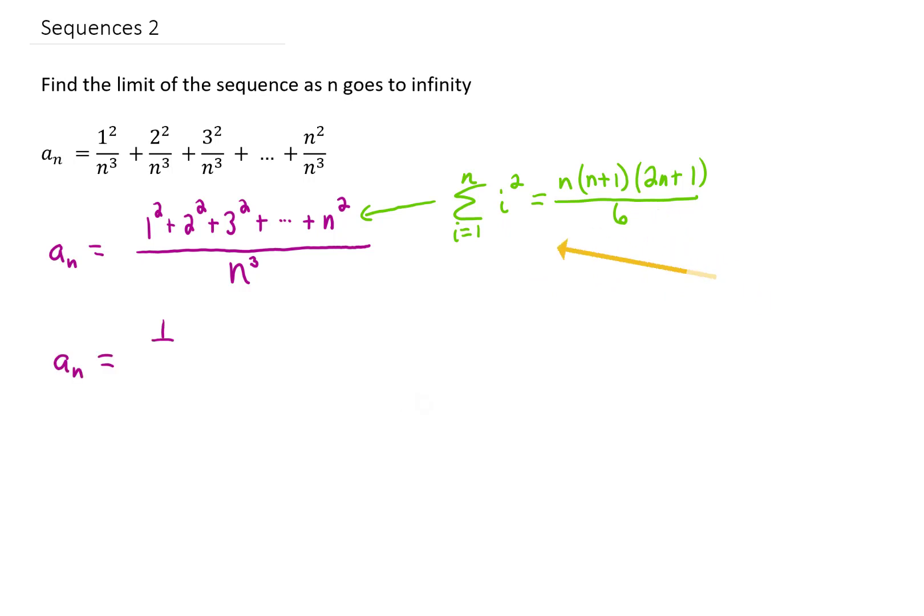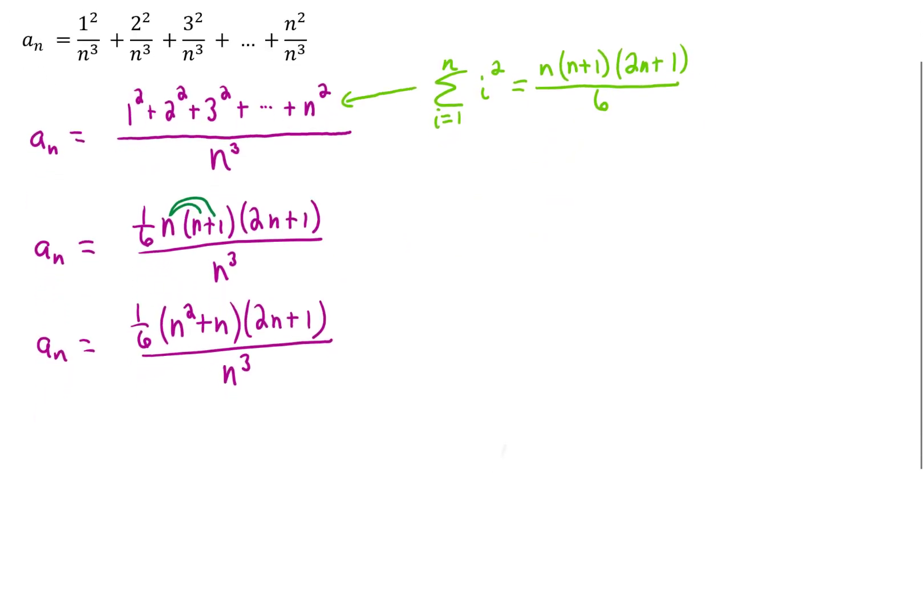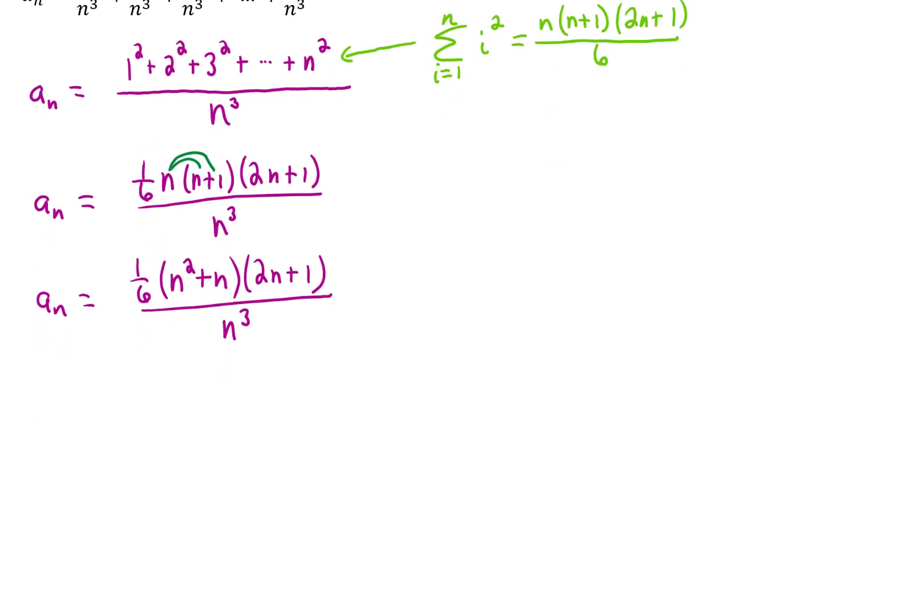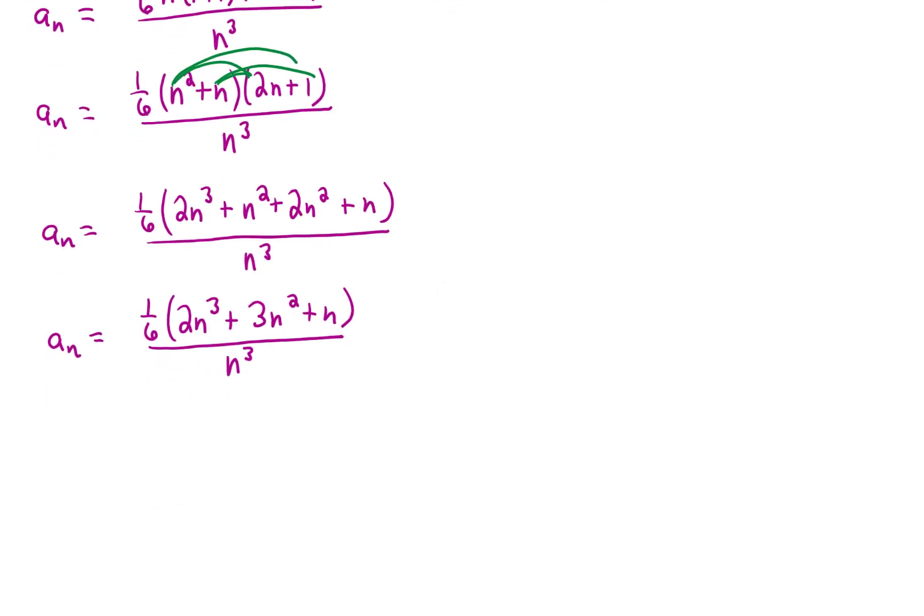I'm going to pull the 1 sixth outside, and I'm going to start multiplying out the numerator. I'll move this up a little bit and continue multiplying out the numerator. I'll combine some like terms now, and I suppose we can multiply that 1 sixth through the numerator.